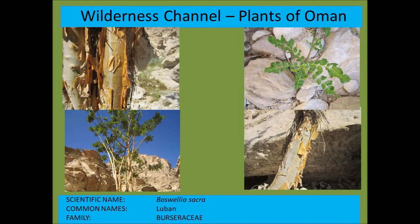Boswellia sacra, known as luban or frankincense — the famous frankincense tree. These trees actually grow outside of the rain shadow in Dhofar, preferring drier conditions. They produce copious resin when injured, and that resin is used for medicinal purposes as well as for burning incense — obviously known as frankincense.